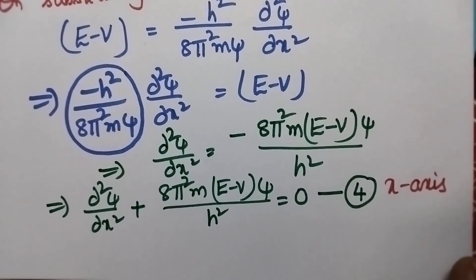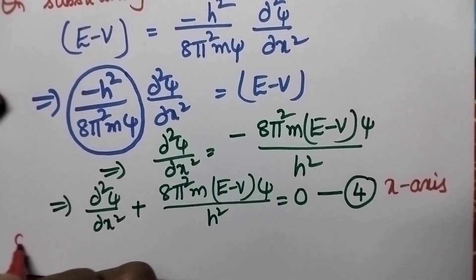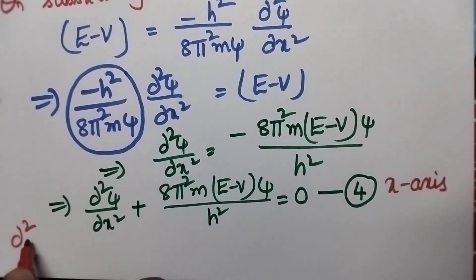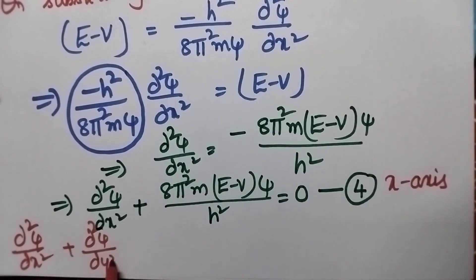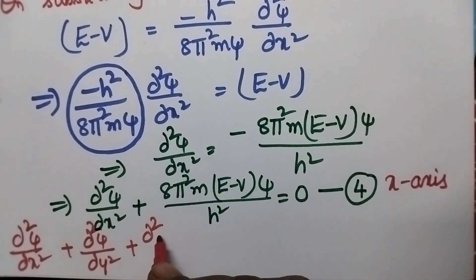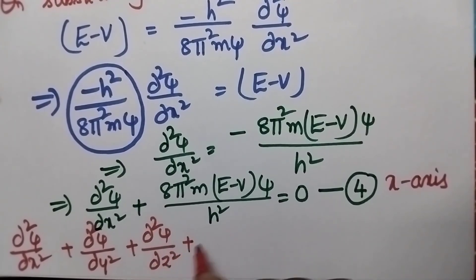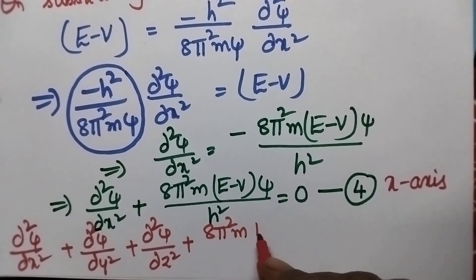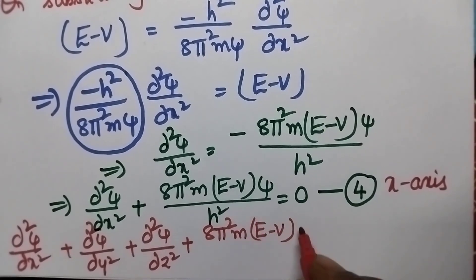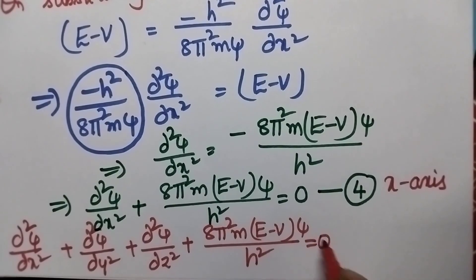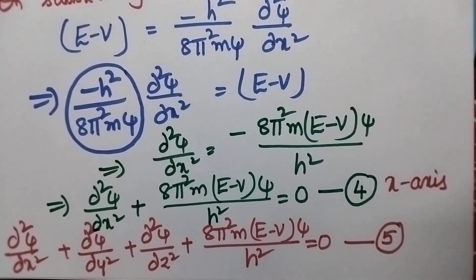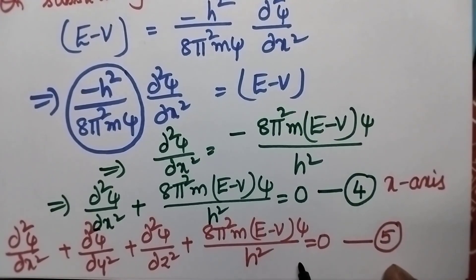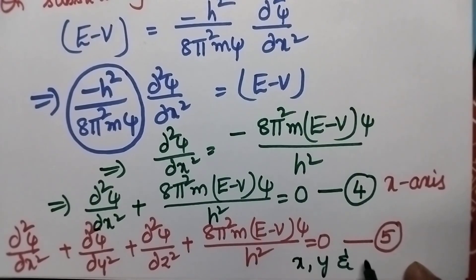Let us write the Schrödinger wave equation along 3 dimensions: ∂²ψ/∂x² + ∂²ψ/∂y² + ∂²ψ/∂z² + 8π²m(E − V)ψ/h² = 0. This is equation number 5, which explains the wave nature of the electron along the x, y, and z axes.